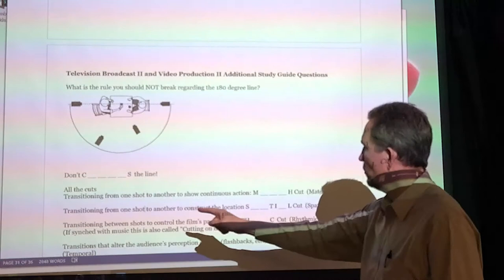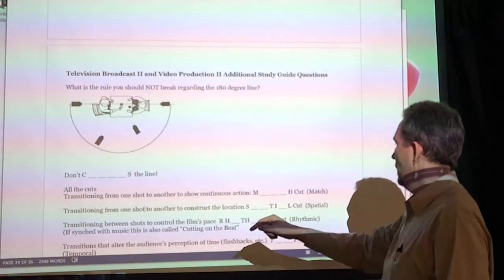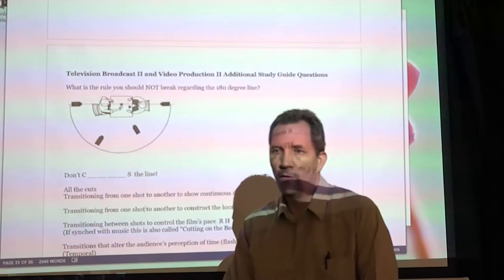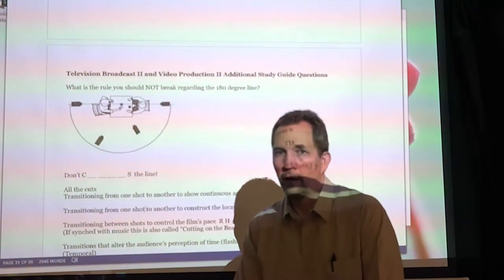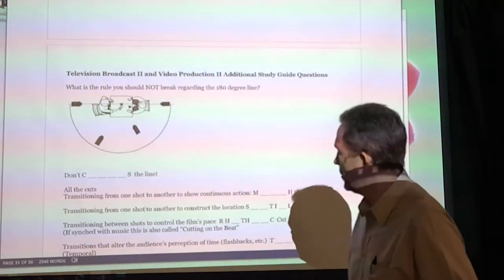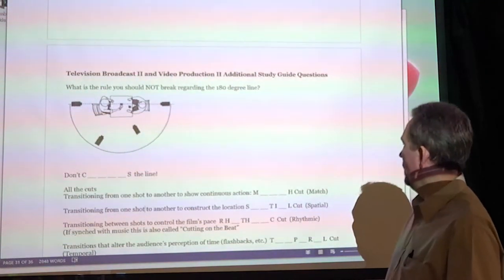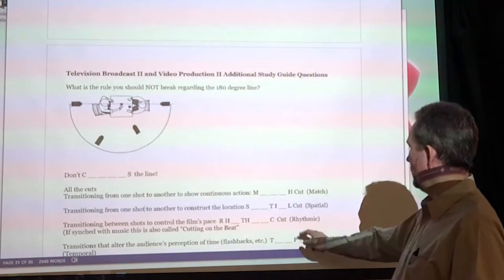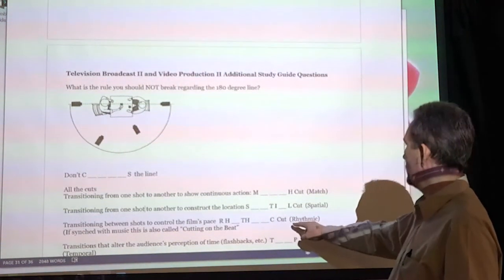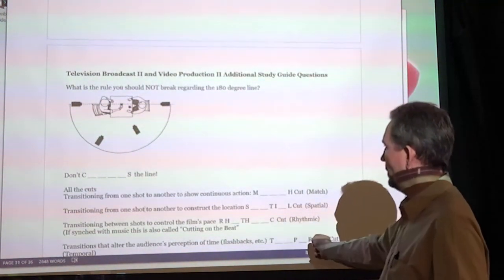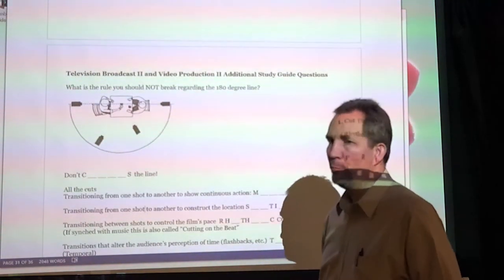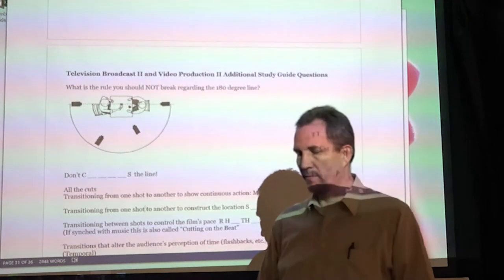Transitioning between shots to control the film's pace. That's called a rhythmic cut. Rhythm. And the galloping horses are getting closer and closer. Bet you can't spell rhythmic on your own. It's such a weird word. I understand you can actually drop out the H or something like that. But anyway, that's the way they want us to spell it. A rhythmic cut. And if you got music going along and you cut on the beat, that's also a rhythmic cut. And it's very useful.